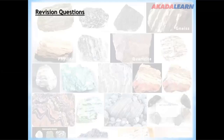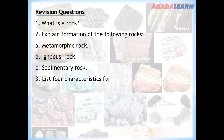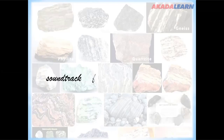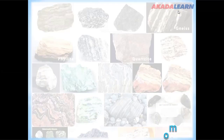Revision questions: number one, what is a rock? Number two, explain the formation of the following rocks: metamorphic rock, igneous rock, and sedimentary rock. Number three, list four characteristics for each of the following: metamorphic rock, igneous rock, and sedimentary rock. If you find it difficult to answer these revision questions, go over the video again and you'll get it right. Thank you for being on this platform today.